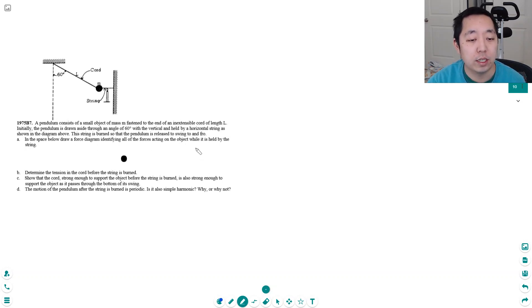Draw a force diagram with all the forces acting on the object while it's held by the string. When it's held by the string, nothing's moving, so we have gravity, FT1 which is this string that's holding it up, and then FT2 which is the force from the pendulum chord at 60 degrees with respect to the vertical.